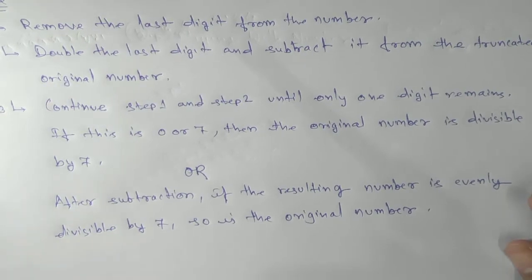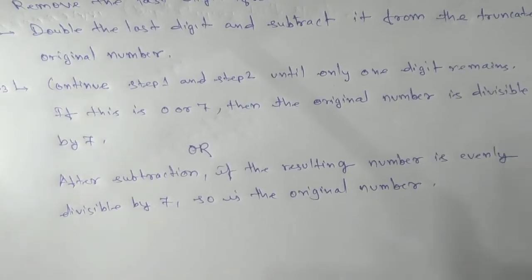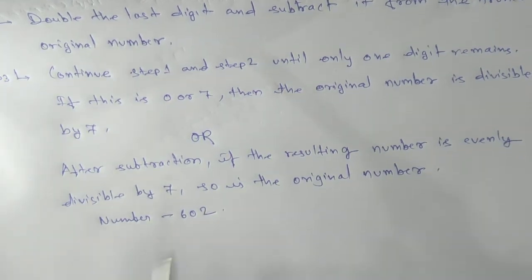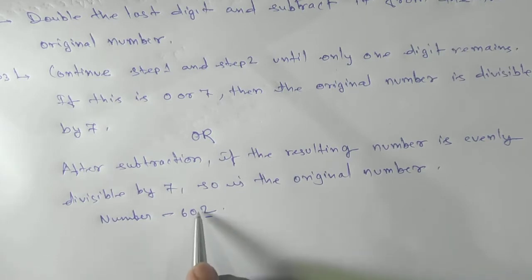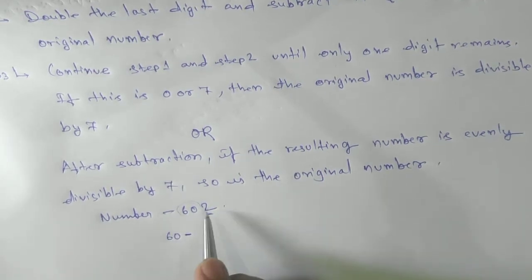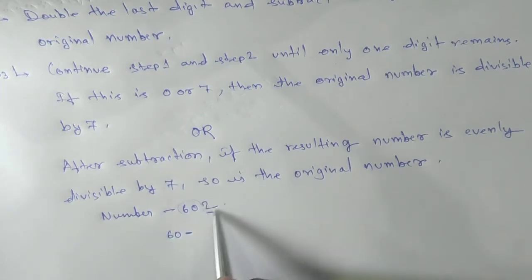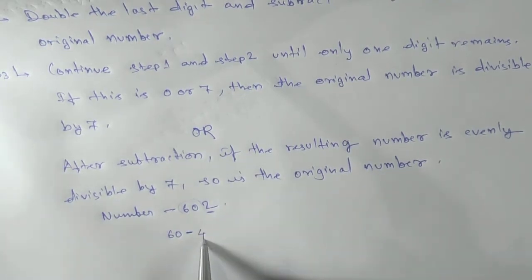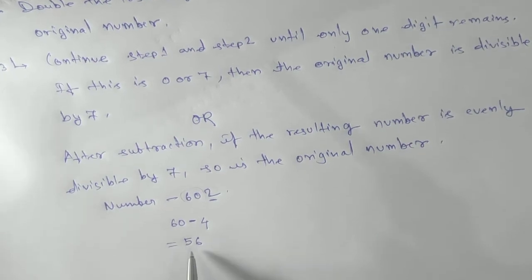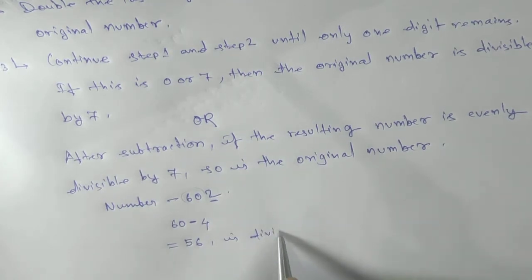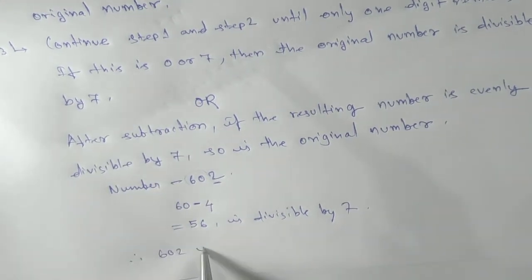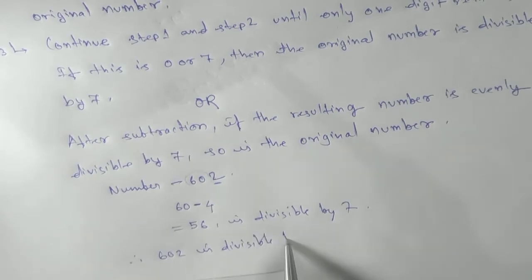So let's take the number 602. Take the unit digit 2 and the truncated part is 60. Now subtract from 60 by double the last digit, that means 2 times 2 equals 4. So 60 minus 4 gives us 56. Now check if 56 is divisible by 7. Yes, it is divisible by 7. Therefore 602 is divisible by 7.